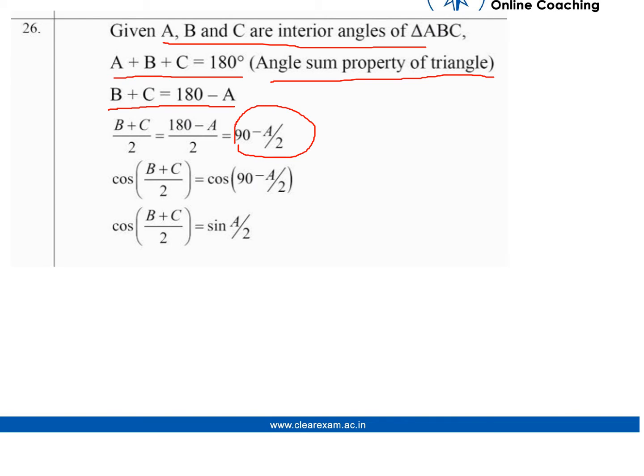Now taking cos of both sides: cos((B+C)/2) = cos(90-A/2).